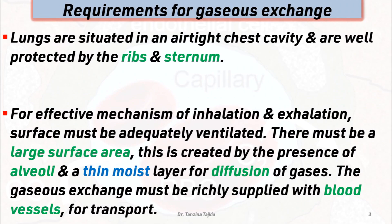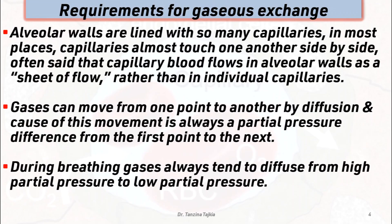The gas exchange surface must be richly supplied with blood vessels for transport. The alveolar wall is lined with so many capillaries that in most places capillaries almost touch one another side by side. It is often said that the capillary blood flow in the alveolar wall acts as a sheet of flow rather than individual capillaries.